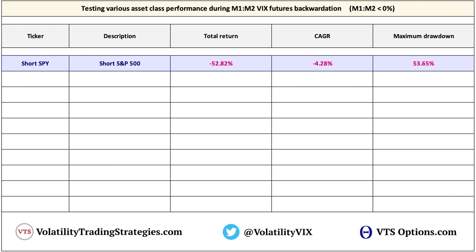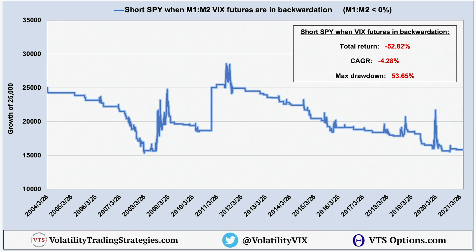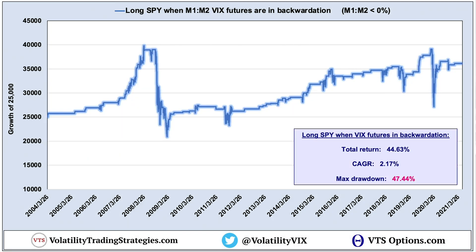Number one — and believe it or not, this isn't even the worst one I'll show you today — is that same baseline example of shorting the S&P 500 through the SPY. This is terrible and I don't expect this strategy to ever work out; the slow bleed and the dreaded give back will all but guarantee the trend remains down long term. But if shorting the S&P 500 during backwardation is this bad, what about being a contrarian and actually going long the S&P 500 instead? Doing the opposite will have a positive return long term, with a compound annual growth rate of 2.17% per year. That's not a lot, but VIX futures are only in backwardation about 16% of the time, so 2% a year on 16% of trading days is actually pretty decent.